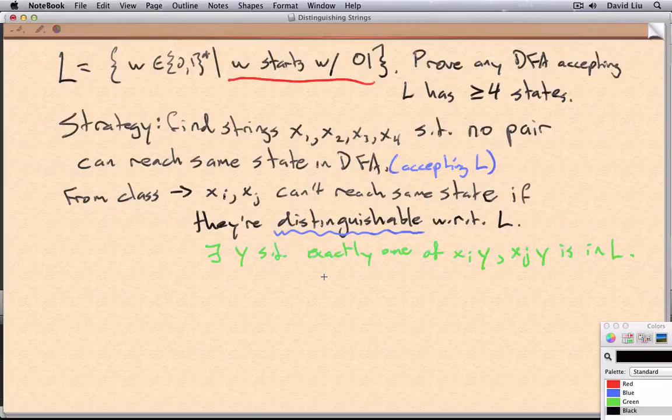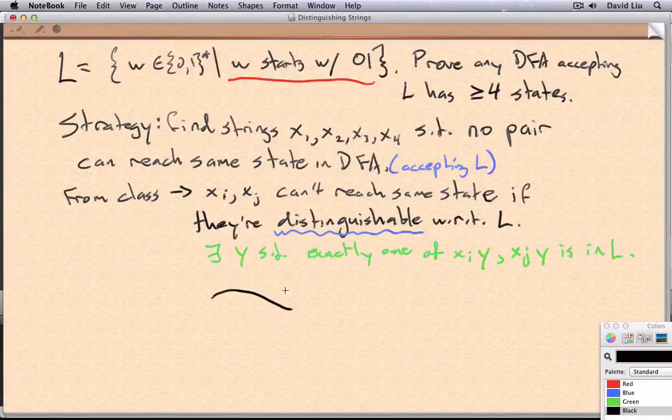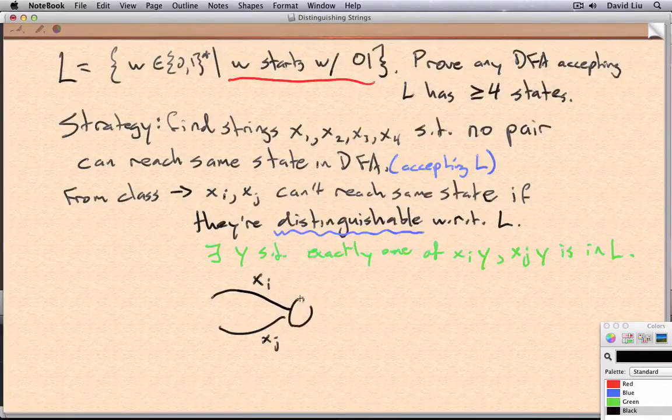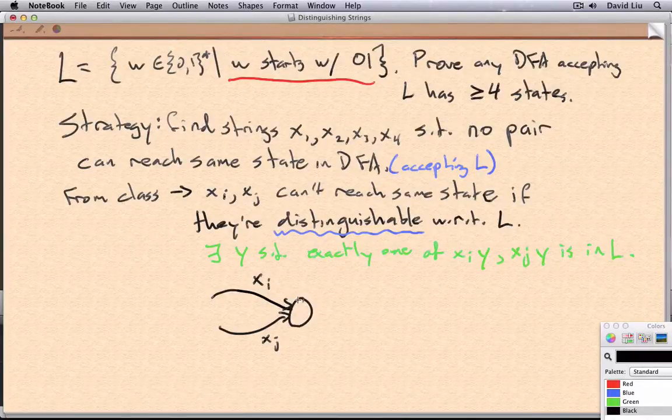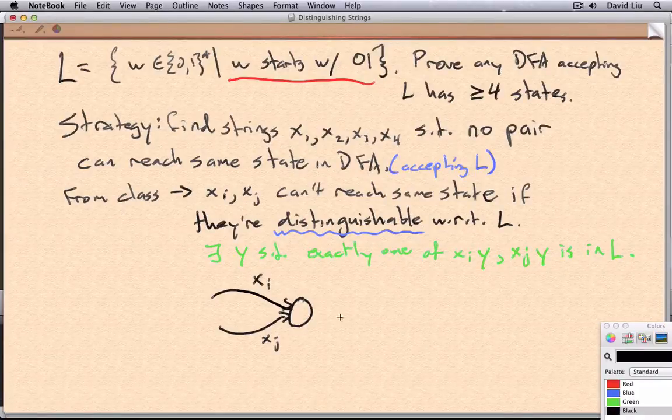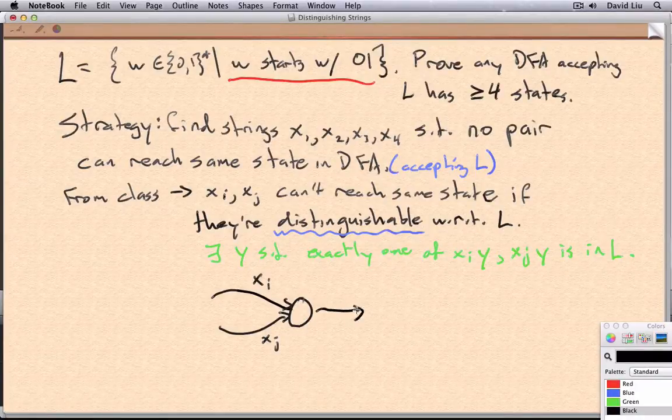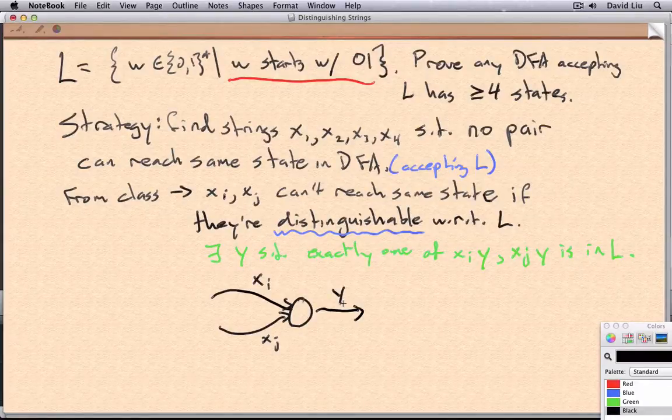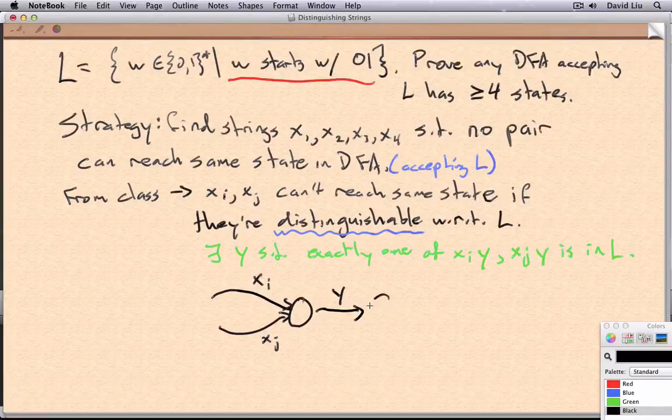Let me remind you quickly about what the contradiction was if this happened. Suppose that XI and XJ both ended up at a state and then since we're considering the strings XIY and XJY, they followed the transitions labeled with the letters of Y and then ended up at some other state.